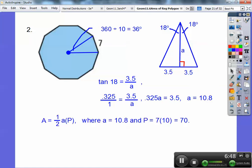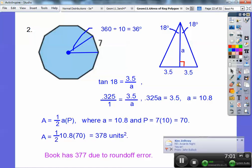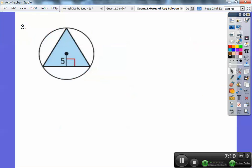So the area becomes one half the apothem times the perimeter. So I just plug in 10.8 times the 70 right here and then take a half of that. So I get 378 units squared. And again, due to round off error, the book has 377.0. So all right, let's try one more, you guys.